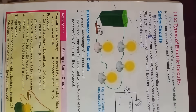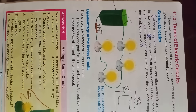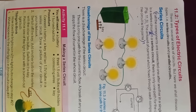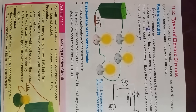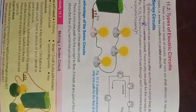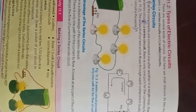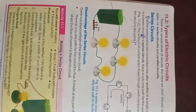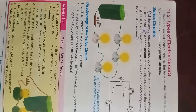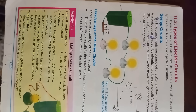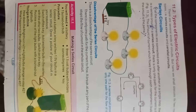Disadvantages of a series circuit: there is only one path for the current to flow, so a break at any part of the circuit stops the flow of current in the whole circuit.